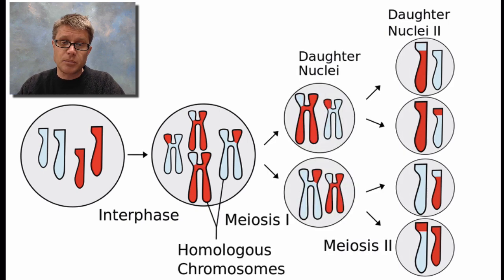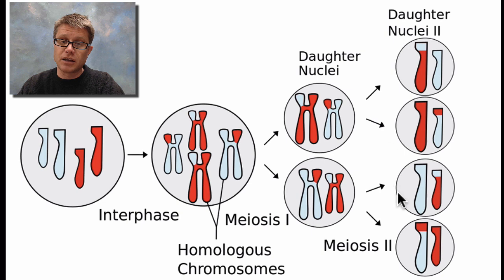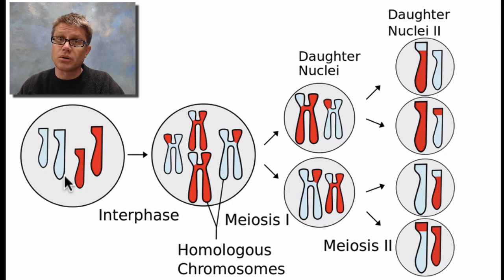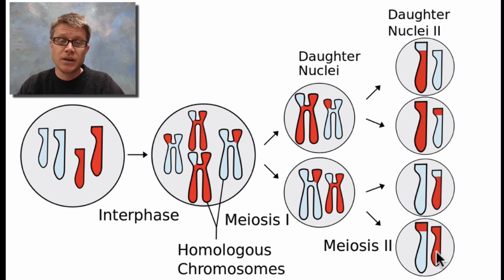Those chromosomes line up in the middle and then divide — that's meiosis 1. Then they divide again — that's meiosis 2. The resulting daughter cells are all different and each would create a new sperm or egg. In humans we start with 2n equals 46, so we have 46 chromosomes, making it much more complex than our simplified example. We can create literally billions and billions of different types of cells through meiosis, giving us variation.